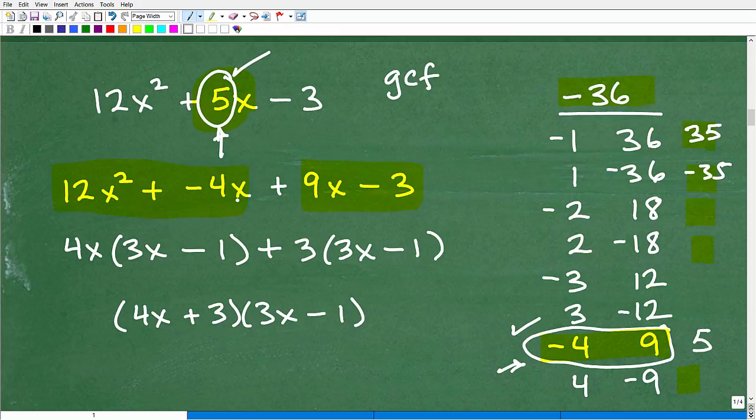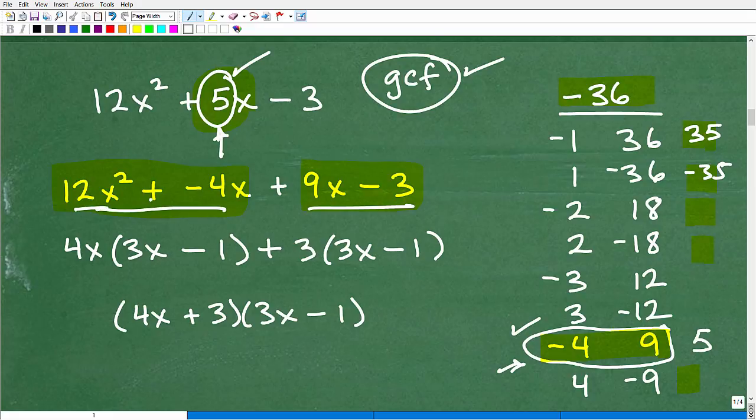But once you rewrite your 5x in terms of these two numbers like so, what you're going to do is group factor. You're going to factor out the GCF in this first group and factor out the GCF in this second group. The GCF is the greatest common factor. So, I have 12x squared plus a negative 4x. What can I factor out here? Well, I can factor out a 4x. Because 4x times 3x is 12x squared. And then 4x times this negative 1 is a negative 4x. Then, we're going to go ahead and factor the GCF right here. So, I can factor out a positive 3. 3 times 3x gets me back to 9x. And then, 3 times negative 1 gets you back to a negative 3.